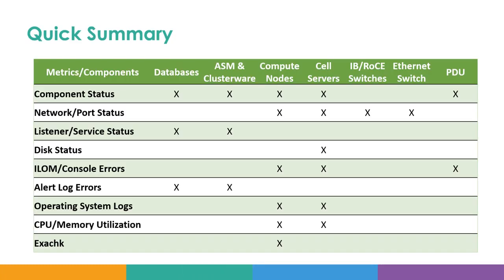Here is a quick summary. Exadata has multiple components, and you need to perform health checks at multiple layers — database, ASM, cluster layer, compute nodes, cell servers, ethernet and RoCE switches, and PDUs. The various types of scenarios include component status up/down, network port going up/down, listener or services at the OIS going down, disks going offline (checked in cell servers), ILOM console errors for compute nodes, cell servers and PDUs, alert logs for errors in the database and ASM, OS logs for compute and cell servers, and CPU/memory utilization and other performance metrics. Finally, ExaCheck can be invoked on the compute node to do a complete health check of all Exadata components.